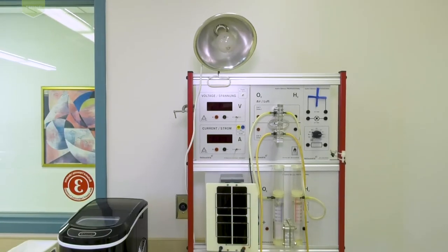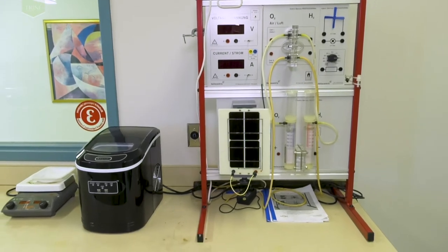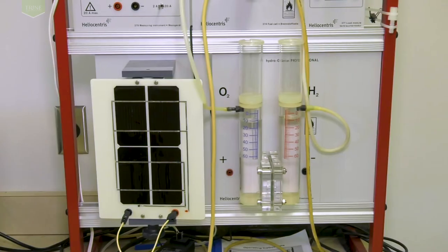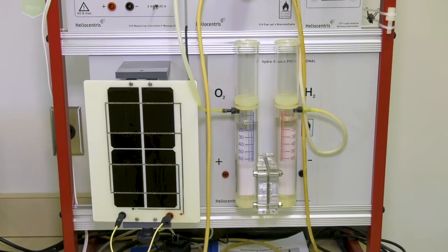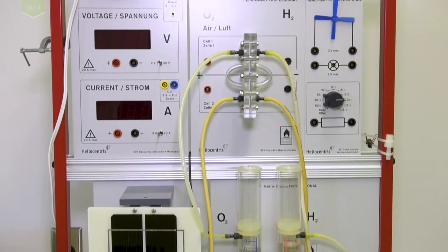The Heliocentris HydroGenius Pro hydrogen fuel cell apparatus is another option for study in the unit operations courses. Students can investigate the effect of load on current and voltage, calculate electrical efficiency, and measure the volume of hydrogen required.